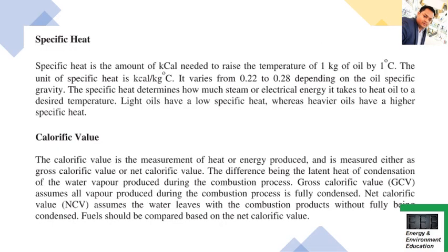Specific heat is defined as the amount of kilocalories needed to raise the temperature of one kilogram of oil by one degree centigrade. The unit is kcal/kg·°C, and it varies from 0.22 to 0.28 depending on the specific gravity of the oil. An important point: light oils have a lower specific heat, whereas heavier oils have a higher specific heat. This may be asked as a short answer or fill-in-the-blank question.